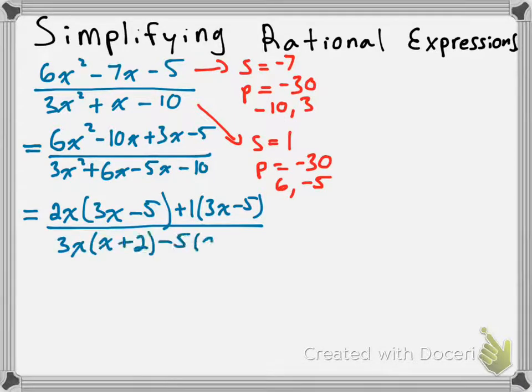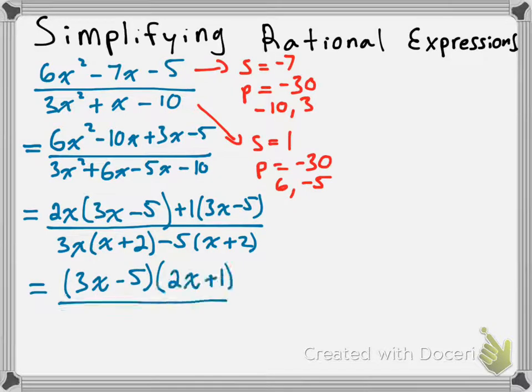For the bottom, we common factor out 3x from the first two terms, which gives us x plus 2. Then we common factor out negative 5 from the second two terms, which leaves us with x plus 2 as our second factor — that's our common binomial factor. So, factoring out the common binomial factor from the top and the bottom, we get 3x minus 5 times 2x plus 1, over x plus 2 times 3x minus 5.